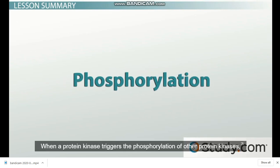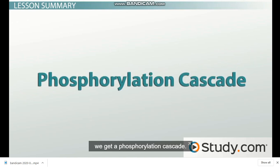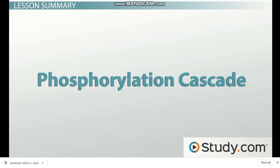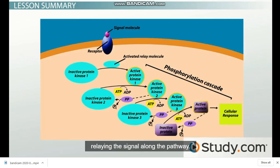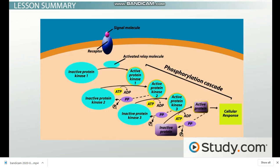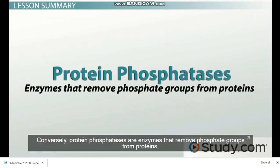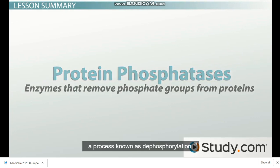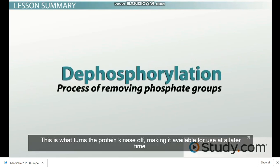When a protein kinase triggers the phosphorylation of other protein kinases, we get a phosphorylation cascade. Similar to a row of fallen dominoes, each protein kinase is acted on by the one before it, relaying the signal along the pathway. Conversely, protein phosphatases are enzymes that remove phosphate groups from proteins — a process known as dephosphorylation — which turns the protein kinase off, making it available for use at a later time.